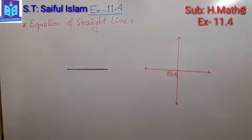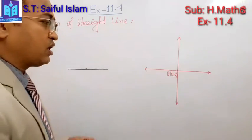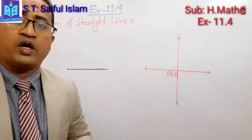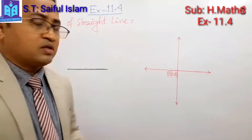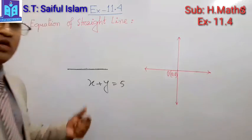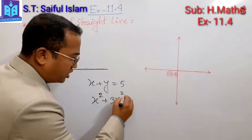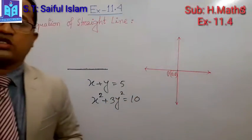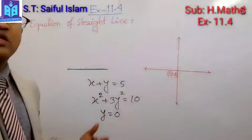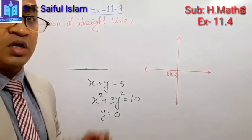Today we will learn about the equation of straight lines. We know many types of equations: linear equation of one variable, quadratic equation of one variable, and equations of two variables — such as x plus y equals 5, which is a linear equation of two variables, or x squared plus 3y squared equals 10, a quadratic equation of two variables.